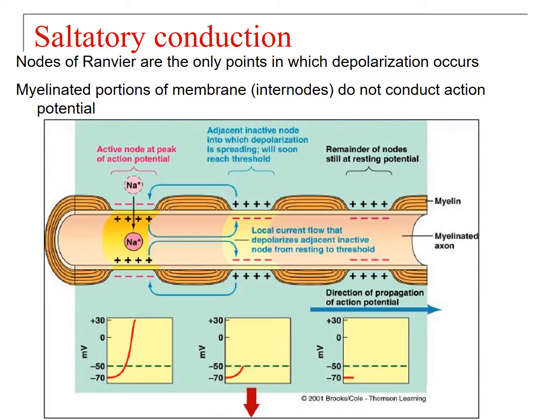The nodes of Ranvier are the only points where depolarization occurs — this type of conduction is called saltatory conduction. Underneath the myelinating cells, there's no depolarization because there are literally no voltage-gated channels underneath the myelinating cells.